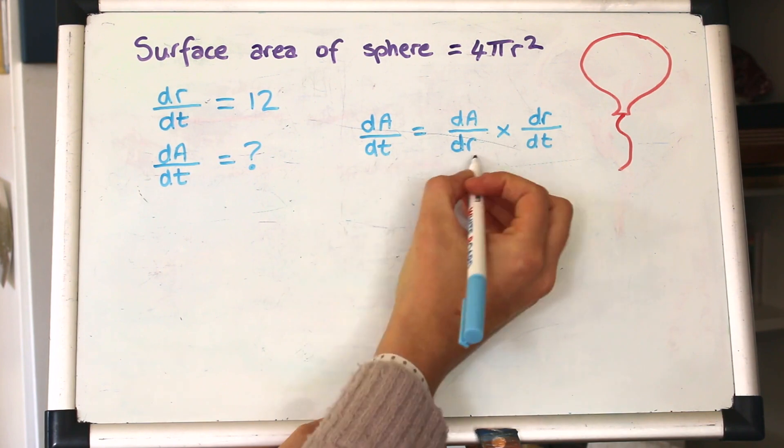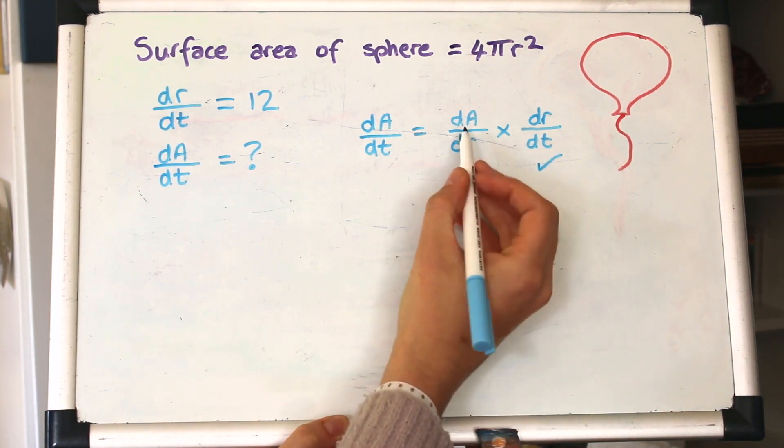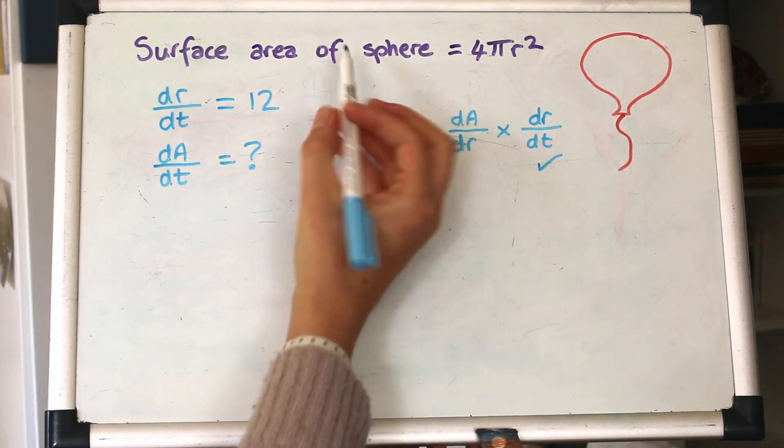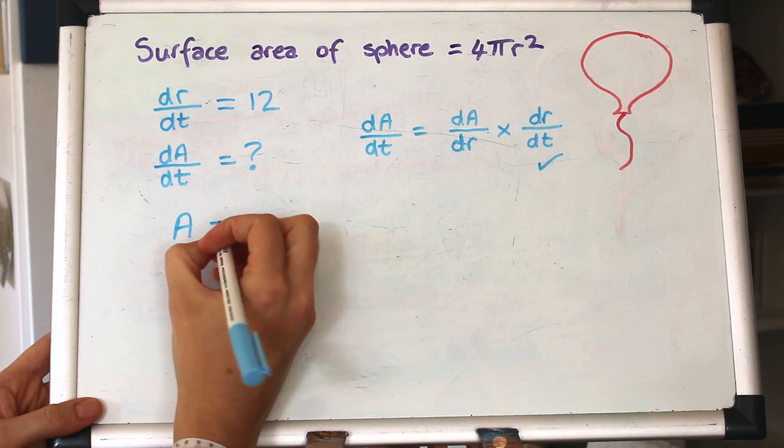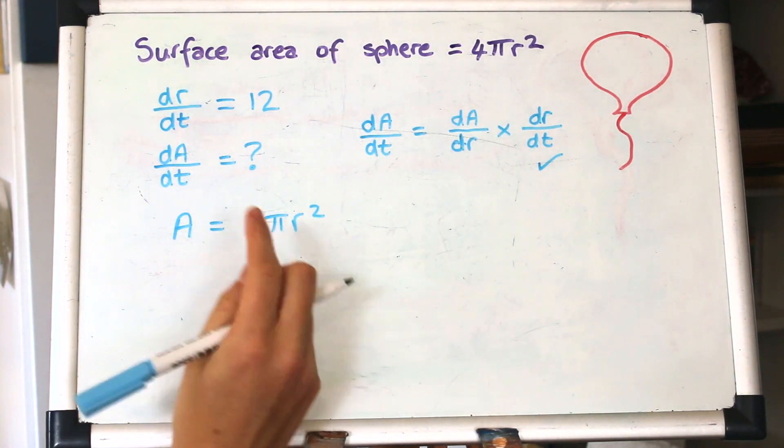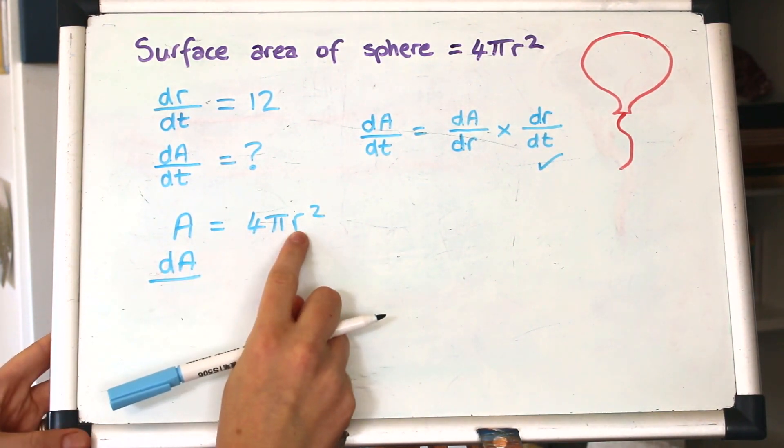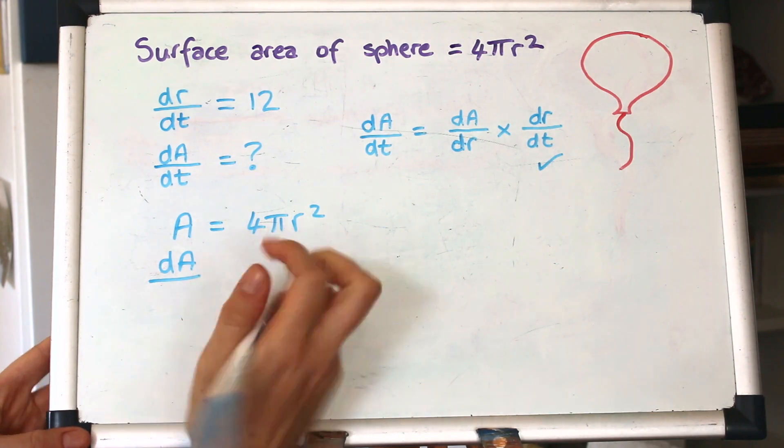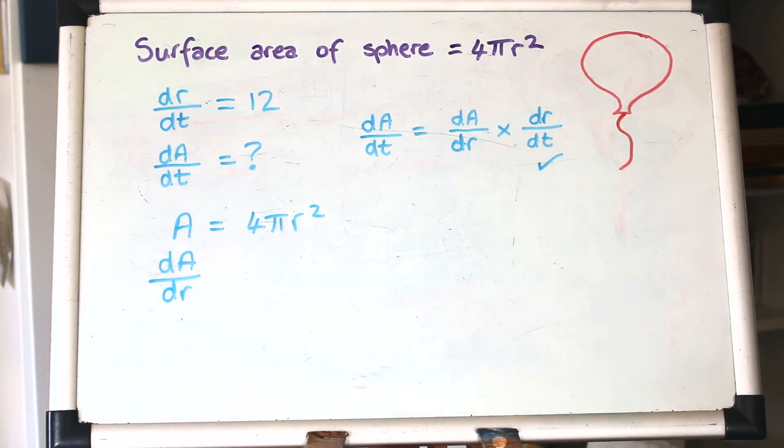That's what we're wanting to find. dr by dt we have, that's 12, and we need now dA by dr. Now look, here we've got surface area of a sphere, we've got area equals 4 pi r squared, so if we differentiate that, we'll have dA, we'll be differentiating with respect to that variable r, so that will be dA by dr, and that's what we're looking for, so that's great.